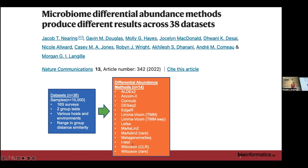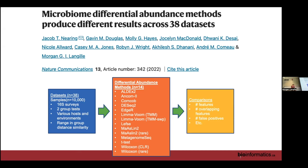The methods include a classic t-test, a Wilcoxon non-parametric test tested with rarefying and CLR transformation, tools commonly seen in microbiome studies like LEfSe and MaAsLin, and newer compositionally-aware tools like ANCOM, ALDEx2, and corncob. Some come from the RNA-seq world, others developed for microbiome data. We hoped there'd be a nice overlap, but that's not quite what we found.